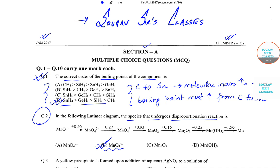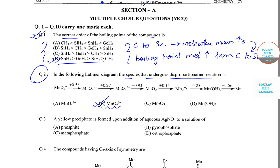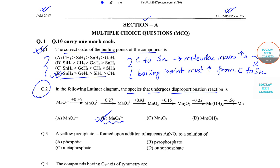Now we move on to question number 3. Question number 3 says a yellow precipitate is formed upon addition of aqueous AgNO3 to a solution. This is nothing but our silver nitrate, so let me write the reaction first.